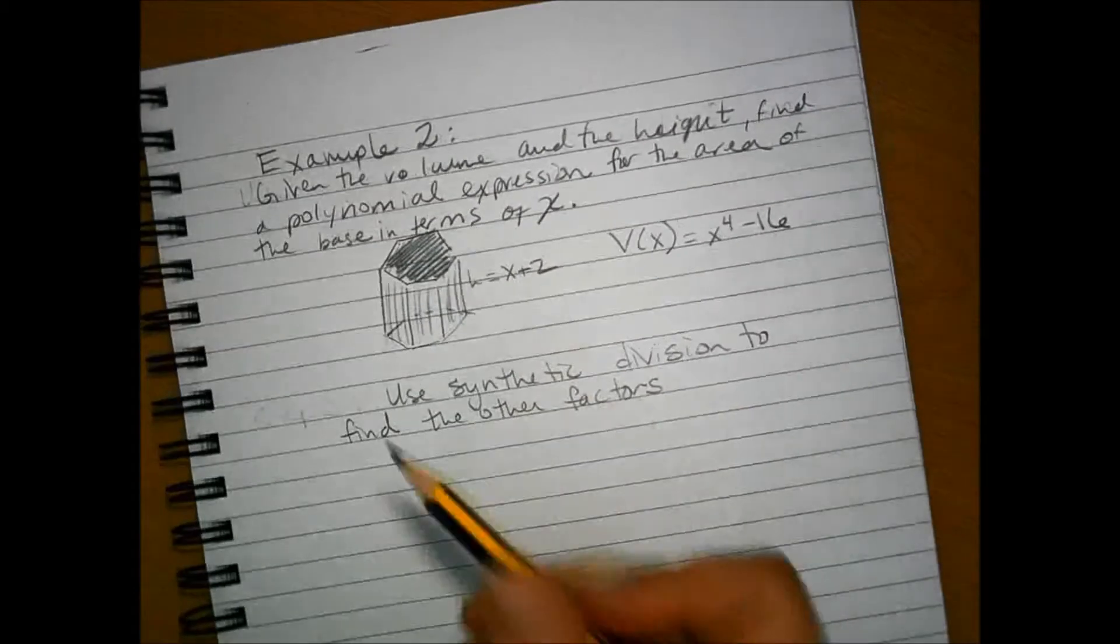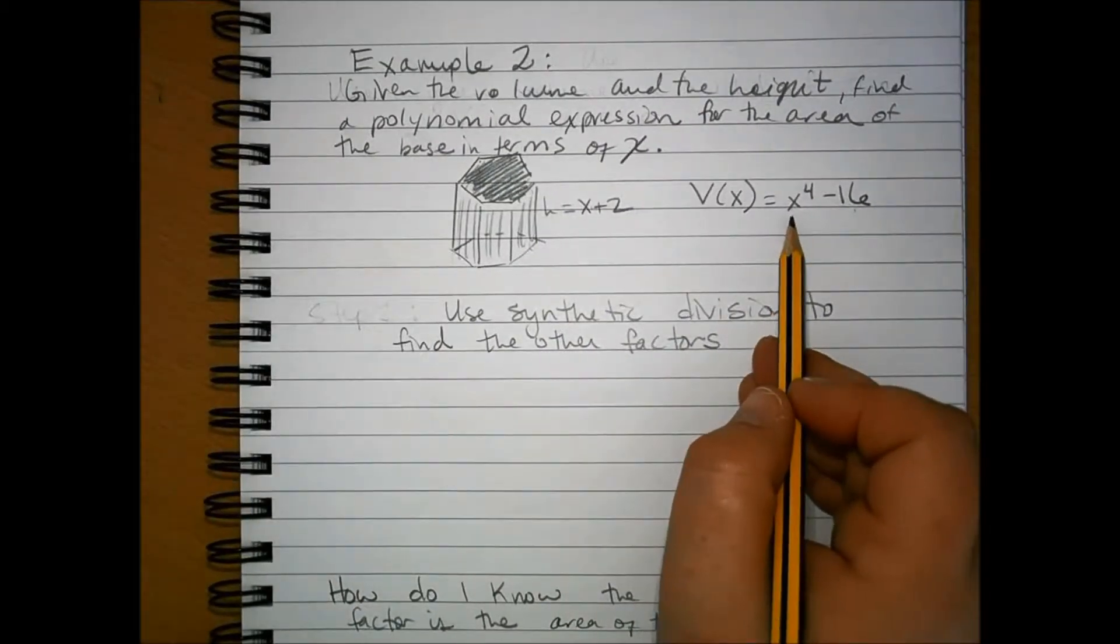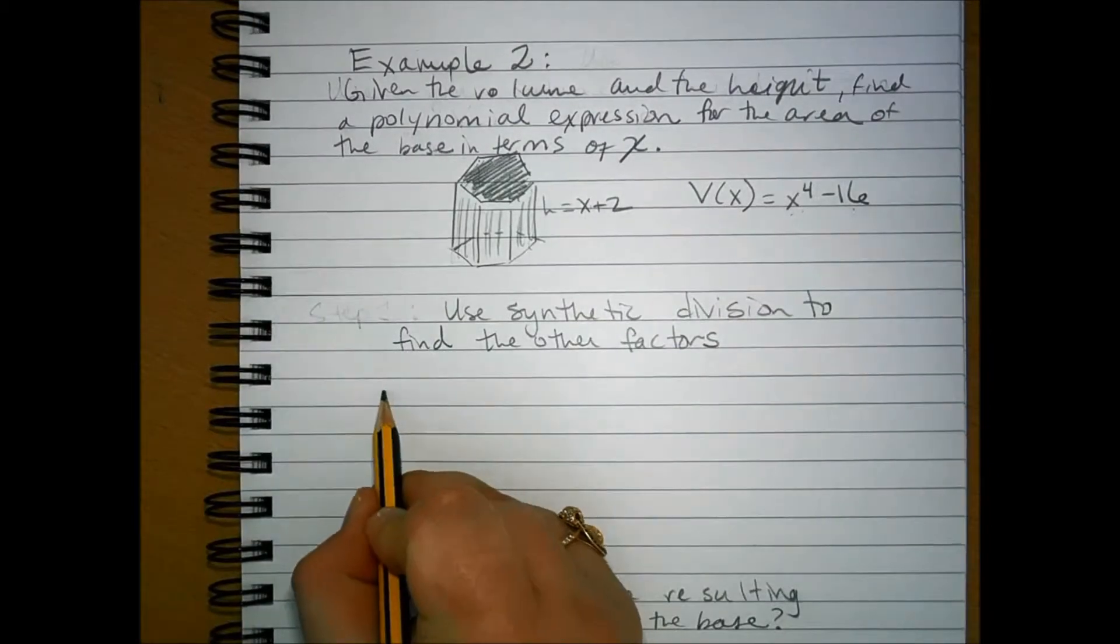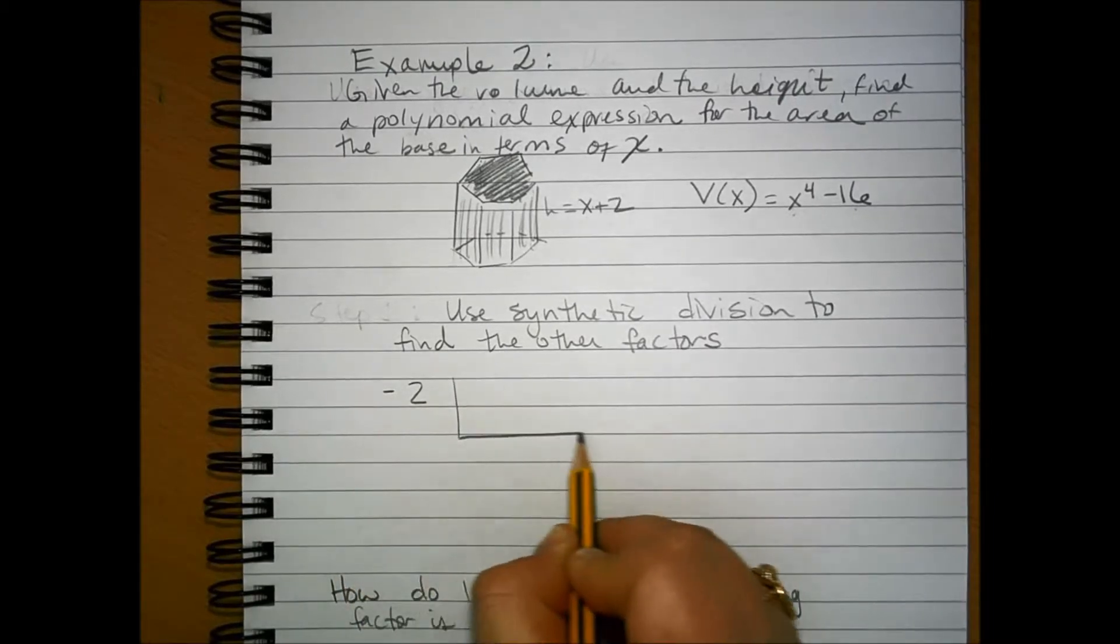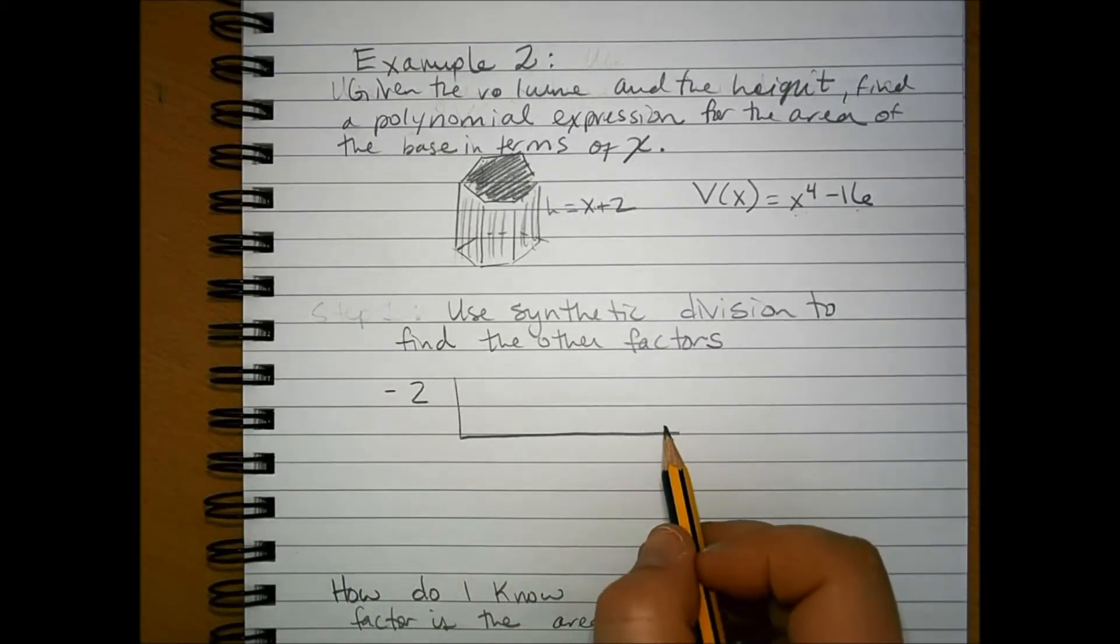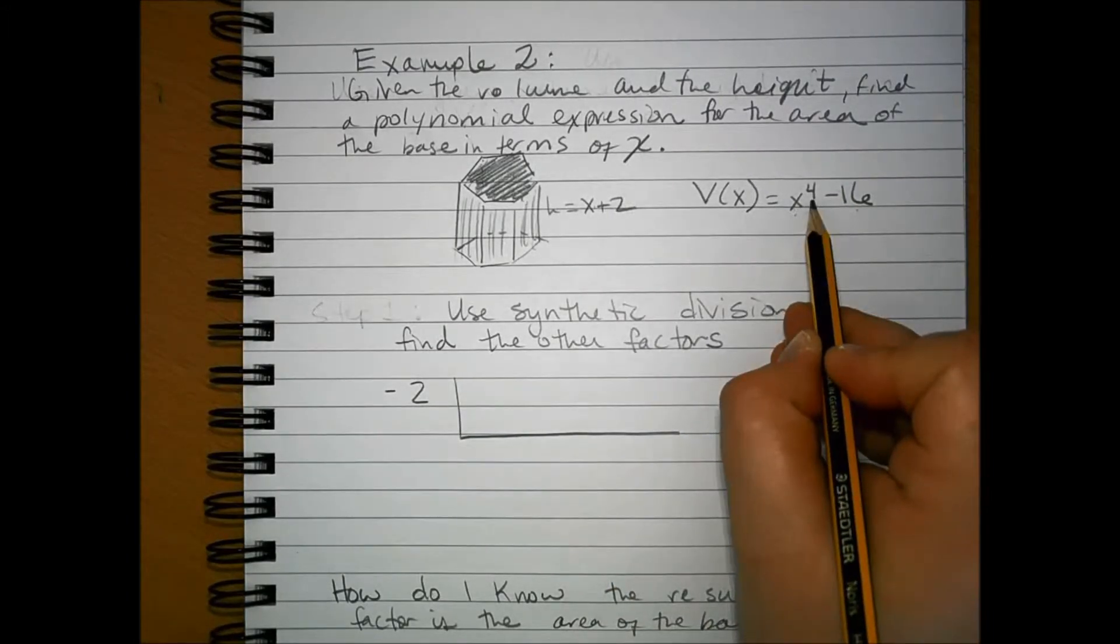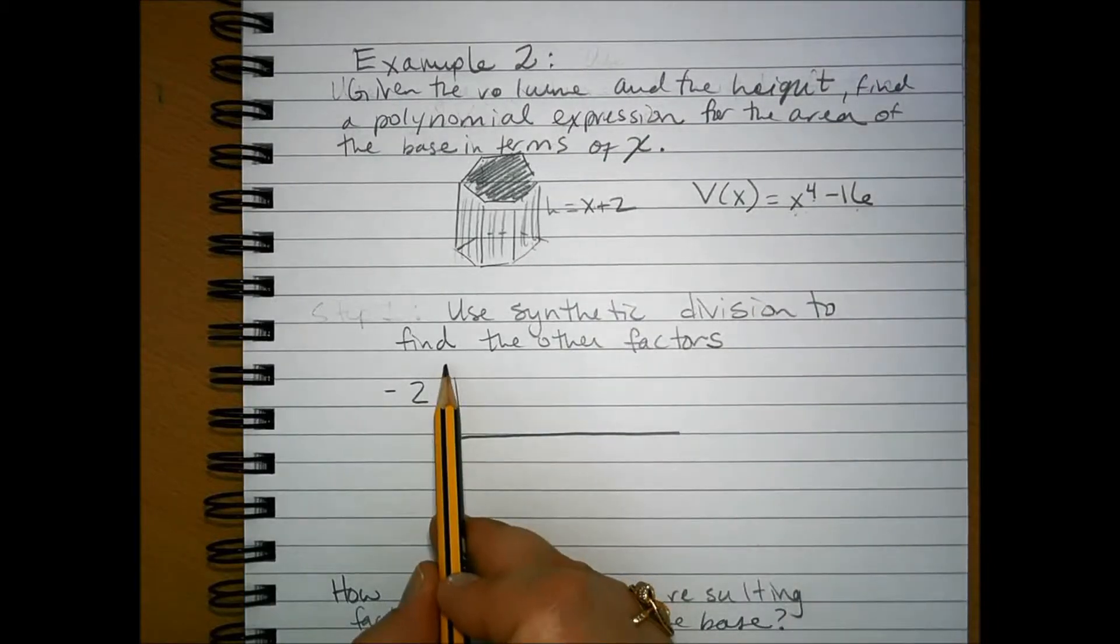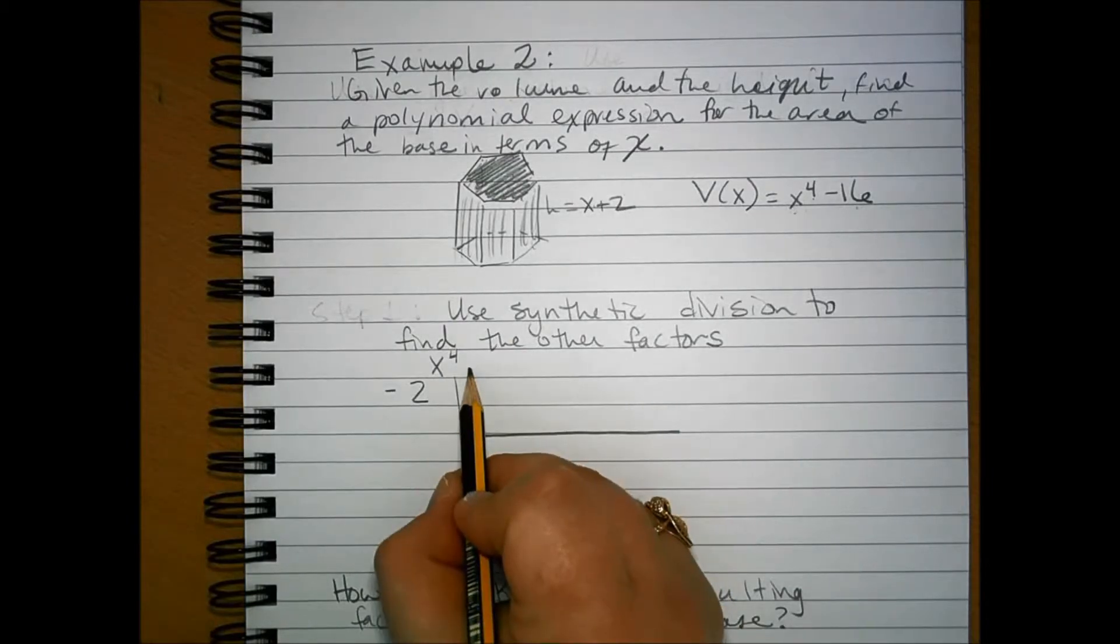So, let's take the volume polynomial, or the polynomial that represents the volume, and the height, and we're going to use synthetic division to find the other factor. Now, since this is x to the 4th, we actually have some quote unquote missing terms. So, I'm going to rewrite it here as a reminder with the missing terms so I don't miss any coefficients.